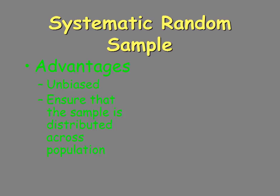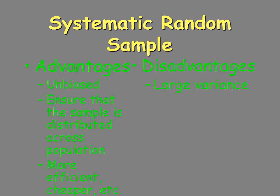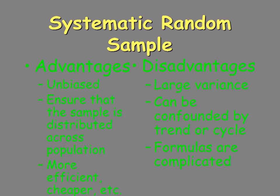Systematic random sample advantages: it's unbiased, it ensures that the sample is distributed across the population, and it's an efficient process because you just count through to get the individuals — you don't necessarily need the sampling frame. The disadvantages: you can have large variance, and it can be confounded by a trend or cycle. For example, if there's a trend in how people come into the building and you're sampling every 20th, you might miss some groups. The formulas also become more complicated.